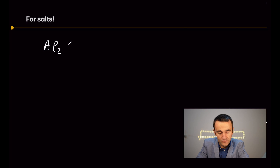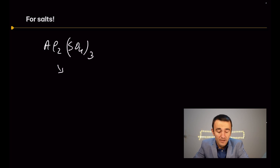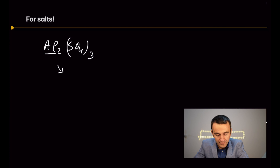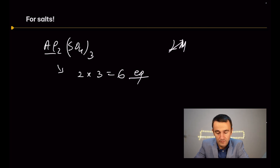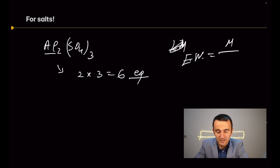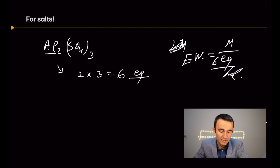Now let's look at salts. For aluminium sulfate, to find the equivalents we take the number of metal atoms — which is two — multiplied by the valence of aluminium, which is three, giving six equivalents per mole. The equivalent weight is the molar mass divided by six equivalents per mole.